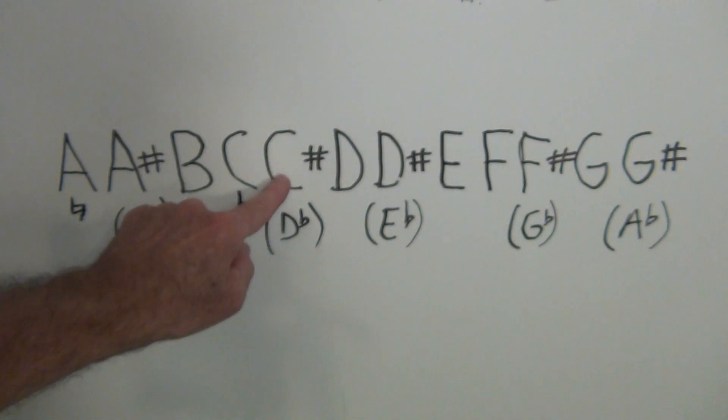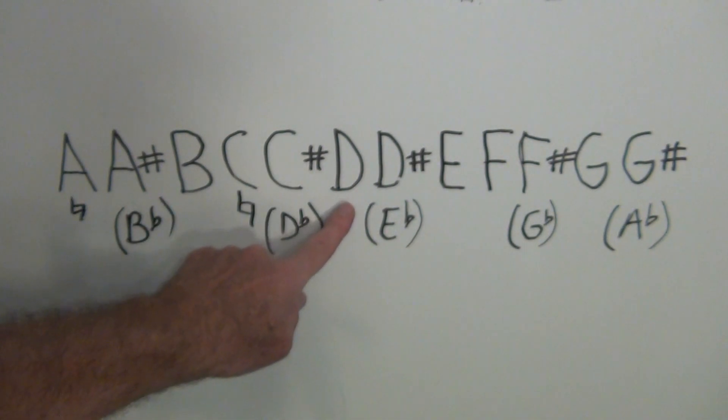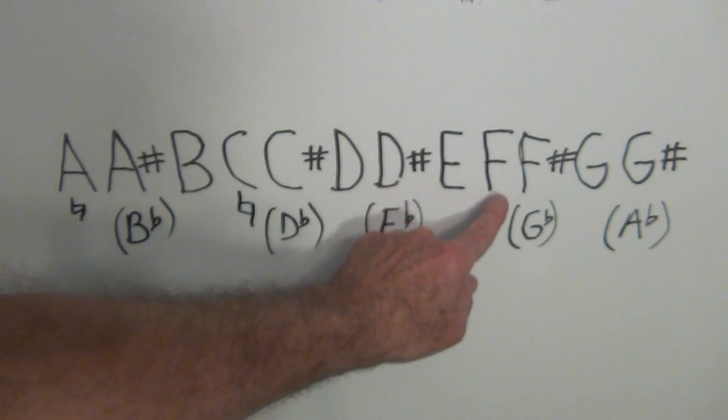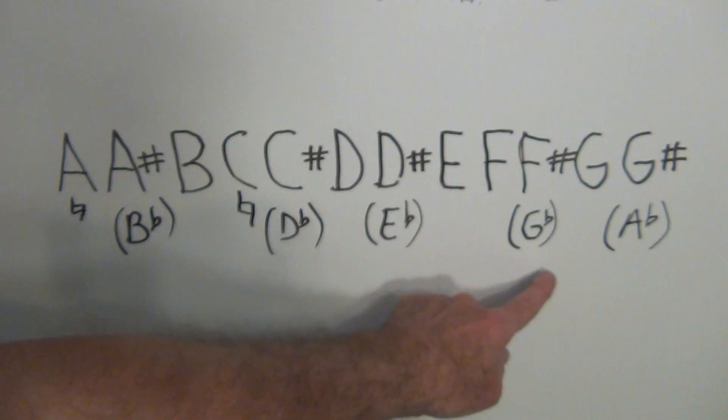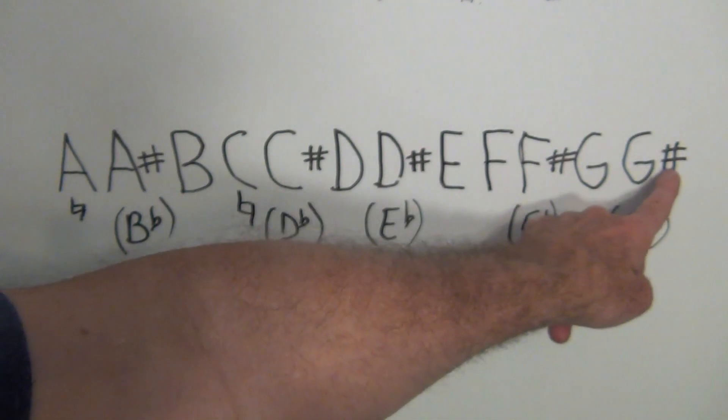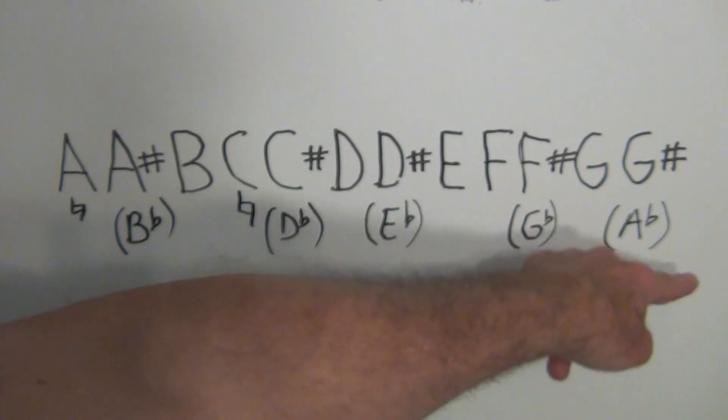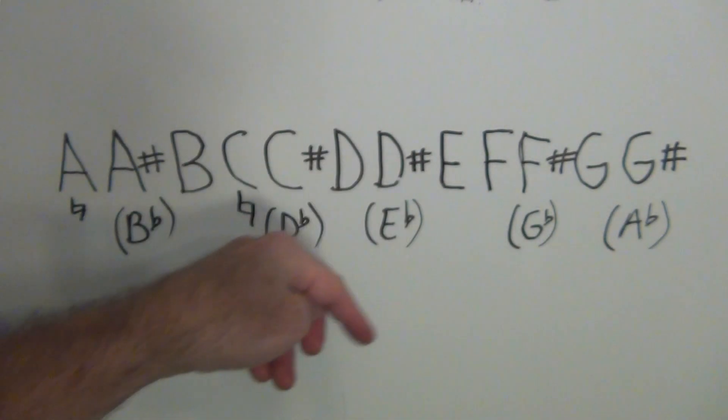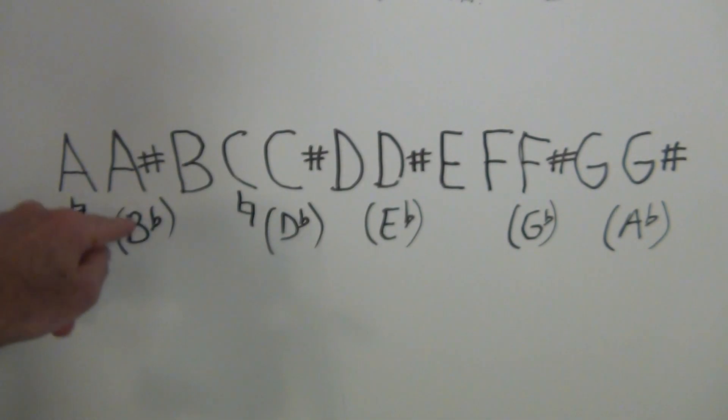B, C, C-sharp or D-flat, D, D-sharp or E-flat, E, F, F-sharp or G-flat, G, and then G-sharp or A-flat. And then it would start over on the A. On your tuners, you're mostly going to see sharps, but if you see a flat, just know that these are identical notes.